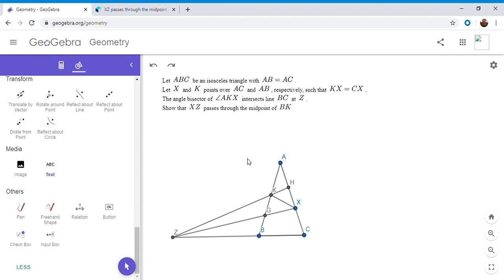X and K are points on AC and AB respectively, such that KX equals CX. The angle bisector of AKX meets the line BC at point Z, and we want to show that XZ passes through the midpoint of BK.